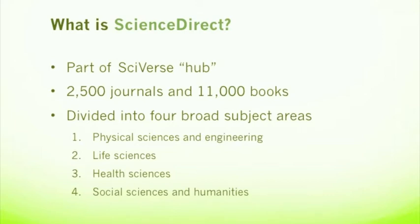But wait — didn't we just learn that Elsevier publishes only 2,000 journals? That's true, but Science Direct also contains content from some journals that Elsevier doesn't publish. The goal is to make it as well-rounded and complete a resource as possible. The content in Science Direct is divided into four broad subject areas.